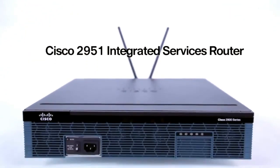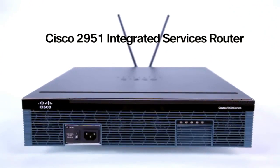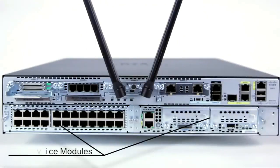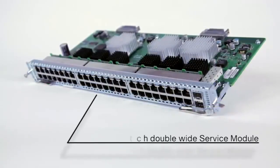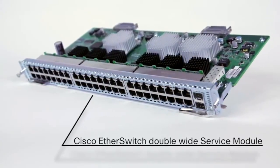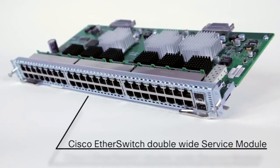The 2951 is the big daddy of the series with the most power and modularity of the bunch, and as you can see here, it has two service module slots. This optional 48 port ether switch is on par with Cisco's most advanced line of catalyst switches.